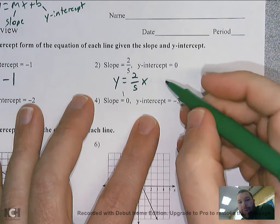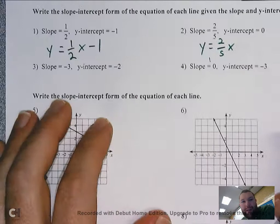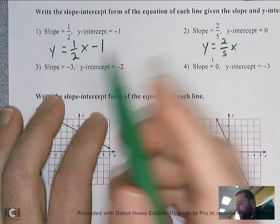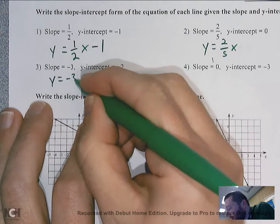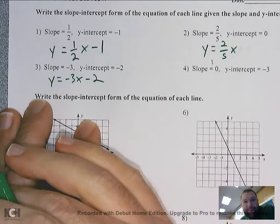If there's ever nothing adding or subtracting in a linear equation, that just means the y-intercept is zero — the line is crossing right at the origin. This one: the slope is negative three and the y-intercept is negative two, so y equals negative three x minus two.